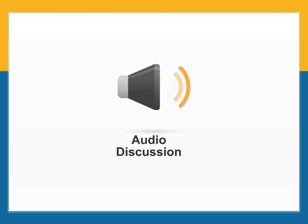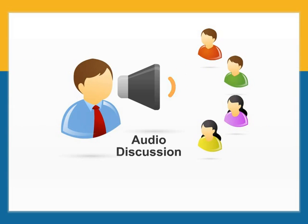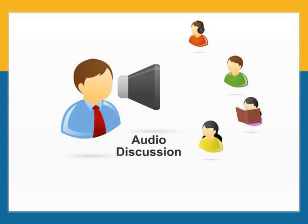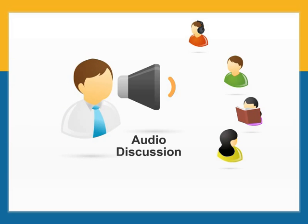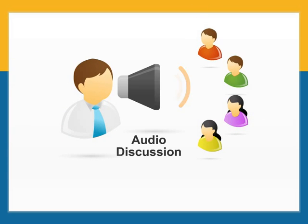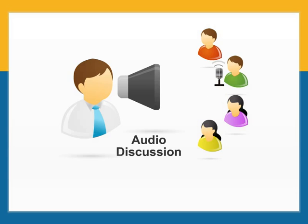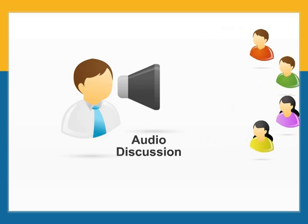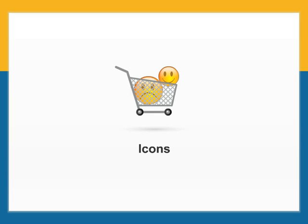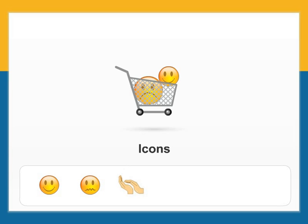Adding the ability to hear other participants adds another level of potential engagement. Every time a participant is presented with another voice, the opportunity exists to re-engage him or her. Discussion is one of the most effective ways to enhance collaborative exercises, so don't rely exclusively on one voice delivering all of the training. Different tools have different icons available, but the most common ones are the smiley face, confused face, applause, raise your hand, agree or yes, and disagree or no.